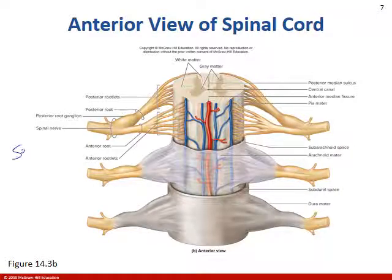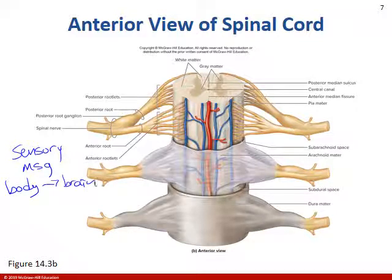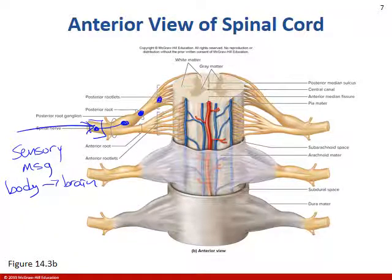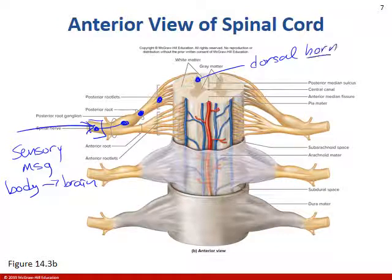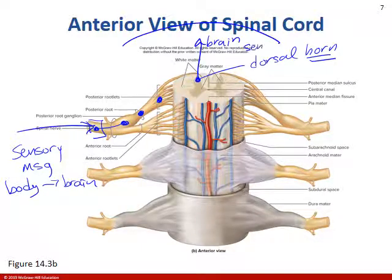Let's walk through the pathways again. For a sensory message to travel from the body to the brain: spinal nerve → posterior or dorsal root ganglion → posterior root → posterior rootlets → spinal cord → dorsal or posterior horn → up to the brain. Sensory messages go to the posterior part of the cerebral cortex. For motor: brain → ventral or anterior horn → anterior rootlets → anterior root → spinal nerve → out to the body.